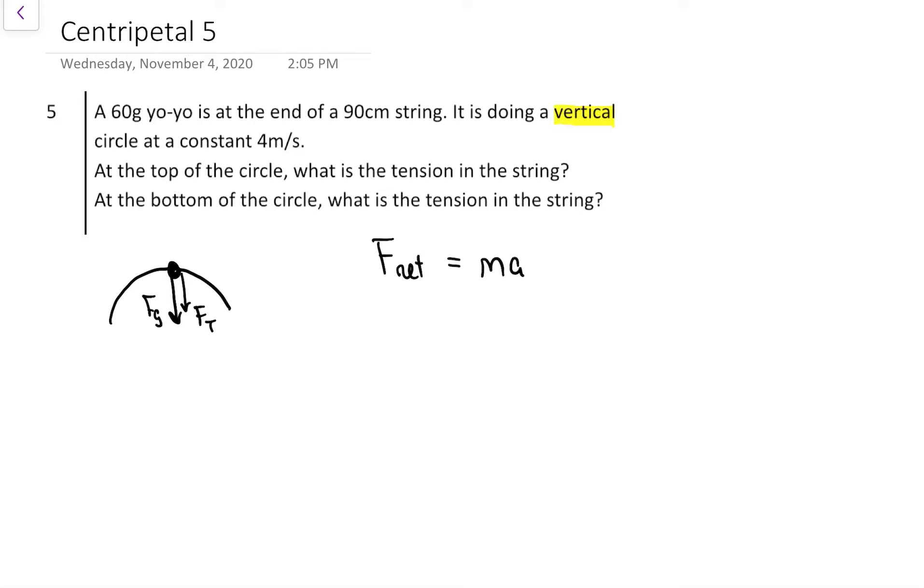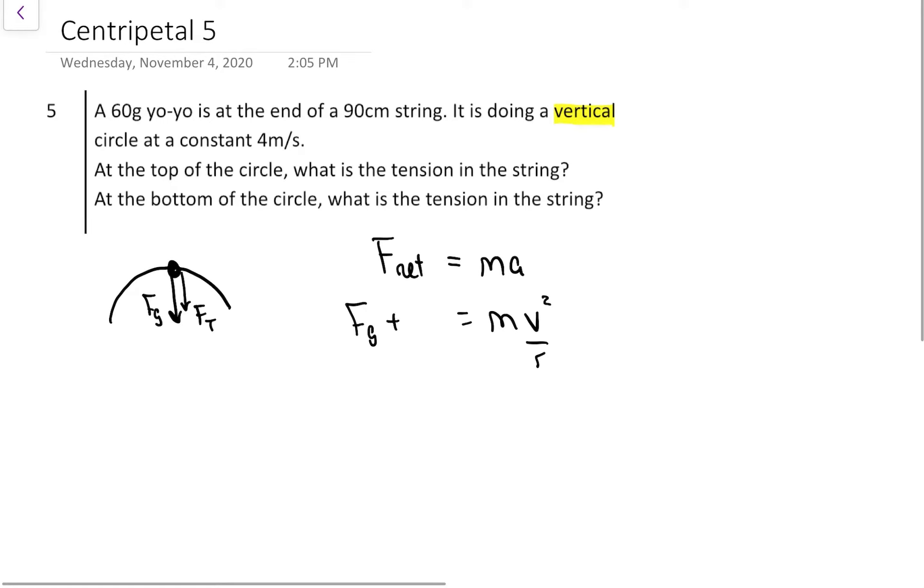When we set up F_net equals ma, which we're always going to do for things going in a circle, that a is going to turn into v squared over r. We have to think about our forces and the directions. In this case, at the top of the circle, centripetal, the objects are always accelerating towards the center. So when it's at the top of the circle, this yo-yo is accelerating straight down. Down becomes my positive in this particular setup. They're both downward, so they're both going to be positive.